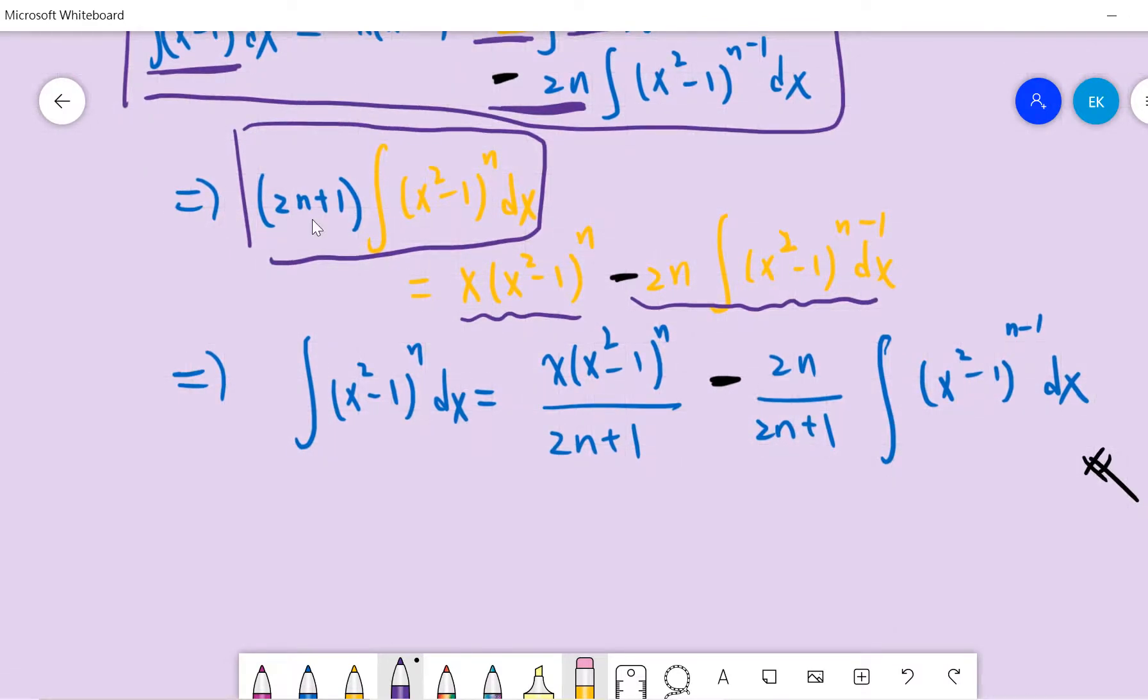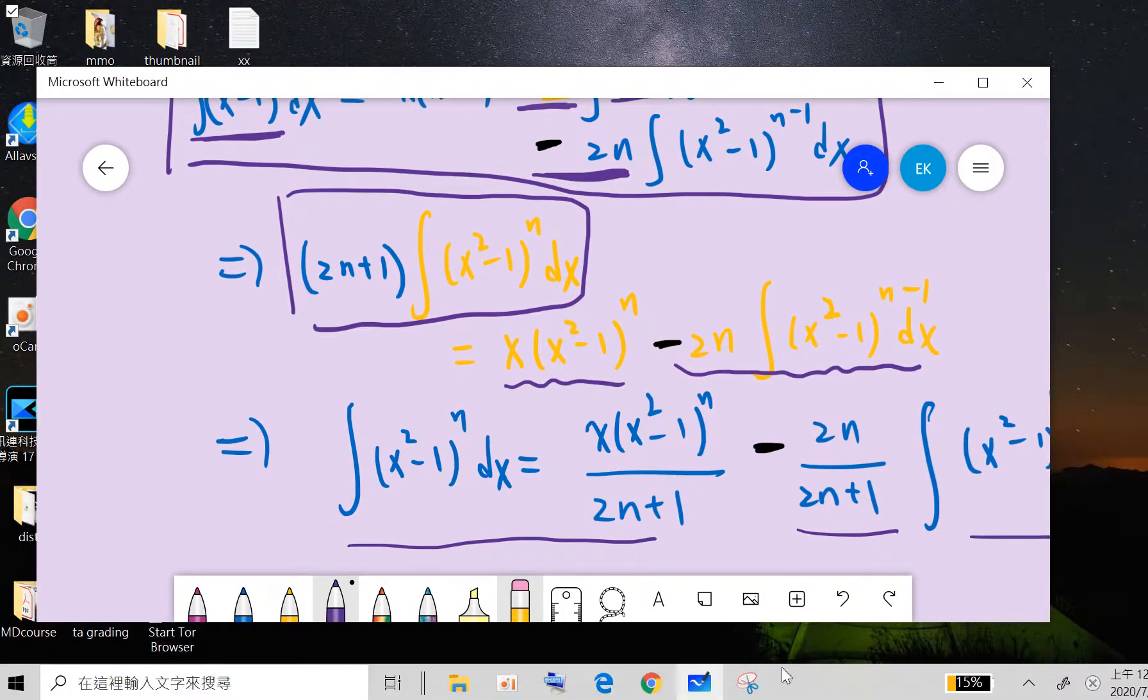And now we divide by this 2n plus 1. So basically we have this. This and this. So basically you can see this is basically the answer.